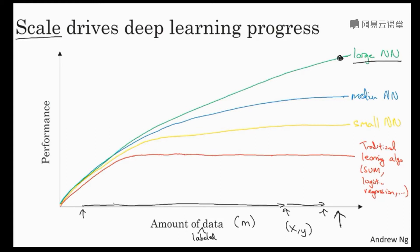A couple other details to this figure. In this regime of small training sets, the relative ordering of the algorithms is actually not very well defined. So if you don't have a lot of training data, it's often up to your skill at hand engineering features that determines performance. So it's quite possible that if someone training an SVM is more motivated to hand engineer features, and someone training even a large neural net, maybe in this small training set regime, the SVM could do better.